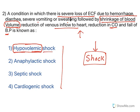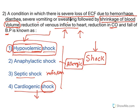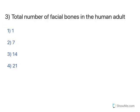Shrinkage of blood volume — 'emia' means blood, 'hypo' means reduced — so this is hypovolemic shock. Anaphylactic shock occurs due to severe allergic reactions, such as hypersensitivity to penicillin causing immune mediator-related circulatory collapse. Septic shock occurs due to severe microbial infection or sepsis. Cardiogenic shock occurs when the heart cannot pump enough blood. The above description matches hypovolemic shock.